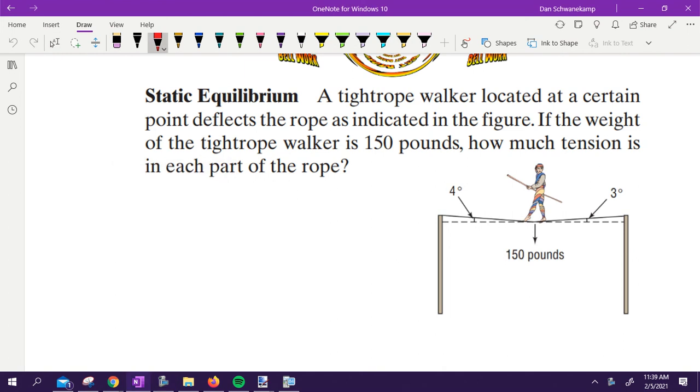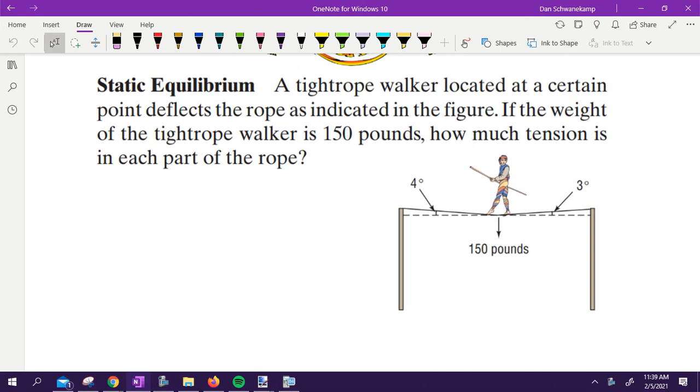All right, so this problem kind of blows my mind with what their answers for A's and B's are. I wish I was at home right now because I would take a video of my kids in the backyard and show this off. Okay, I'll explain it here in a minute. But a tightrope walker located at a certain point deflects the rope as indicated in the figure.